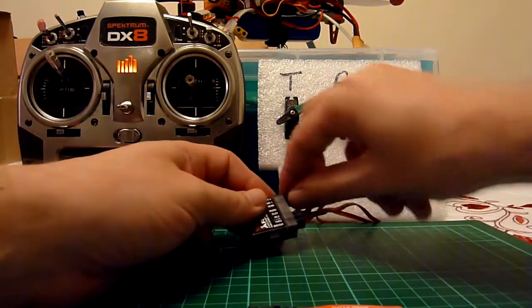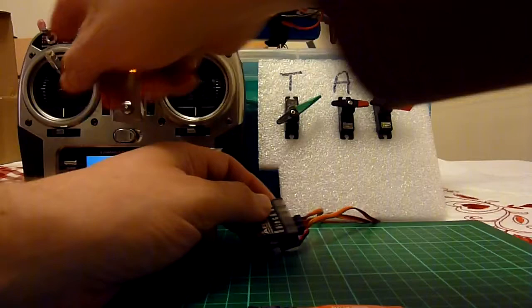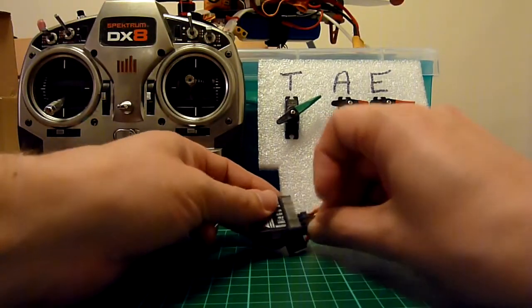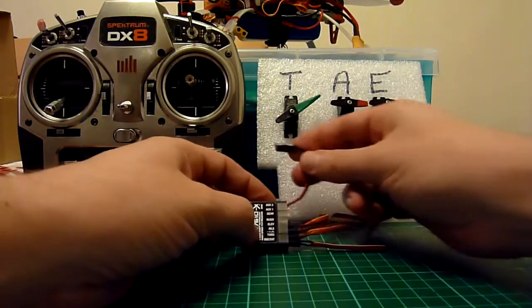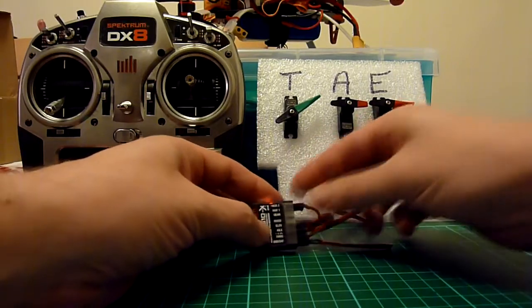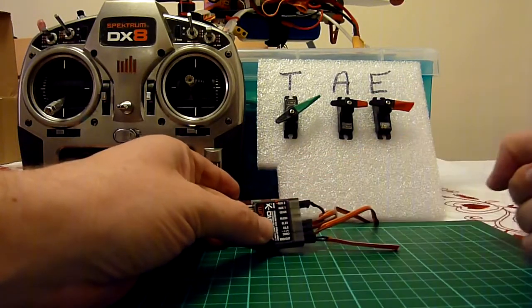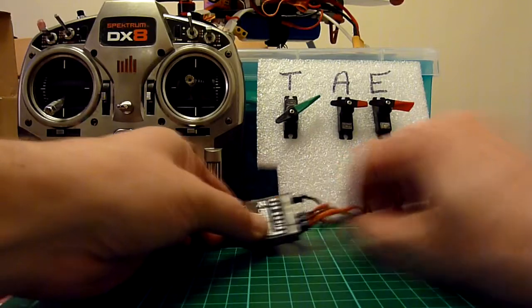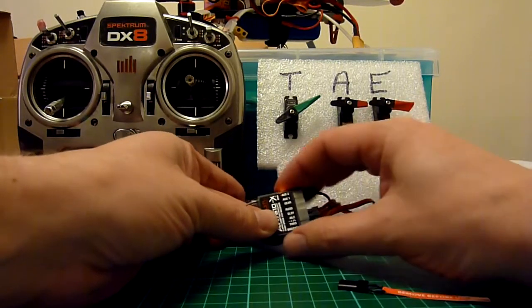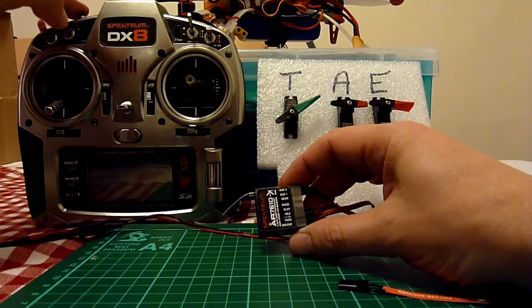Now the alternate bind is a preset bind. So I do exactly the same thing: I plug in the bind plug, I plug in the power lead. As soon as the light starts flashing, I'm unplugging the bind plug. Now I bind same as before.